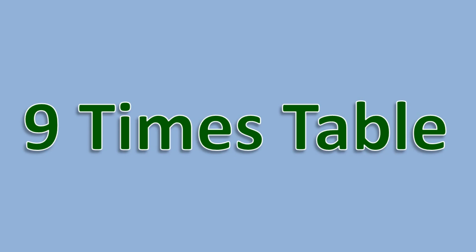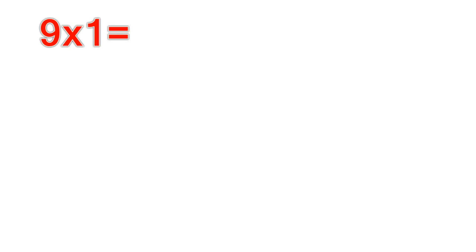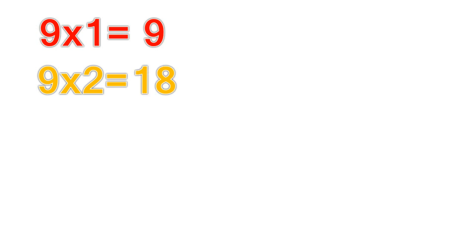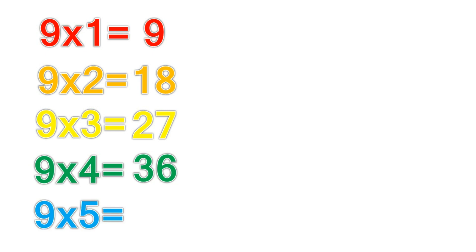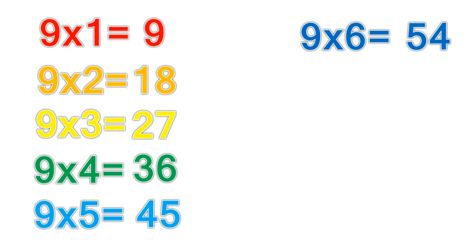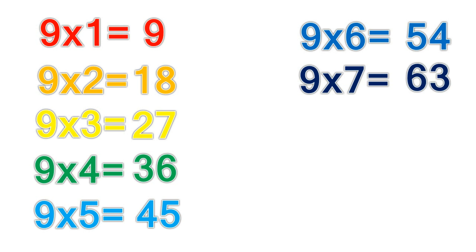9 times table. 9 times 1 equals 9. 9 times 2 equals 18. 9 times 3 equals 27. 9 times 4 equals 36. 9 times 5 equals 45. 9 times 6 equals 54. 9 times 7 equals 63.